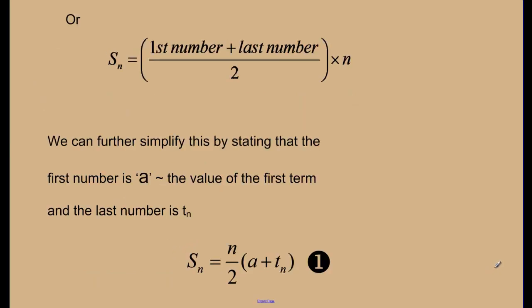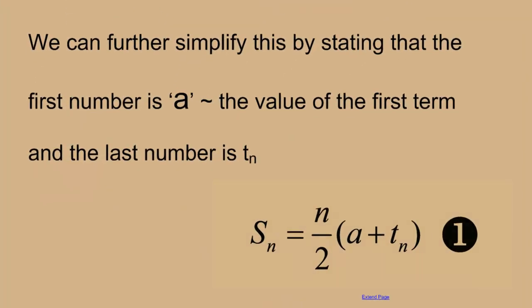If we use the notation we've used previously with sequences, well, now we can simplify this even more to say that the sum of a series of n numbers is equal to n over 2 times a, which we use as the first number, plus t_n, which is the last number in the sequence.